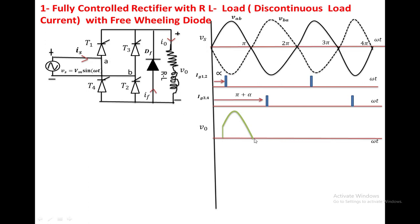The voltage across the load becomes zero up to angle beta, since it equals the voltage across DF, which is zero for an ideal diode. At angle beta, the current comes to zero, so DF also turns off. Between beta and pi plus alpha, no device is conducting, so the output voltage remains zero.